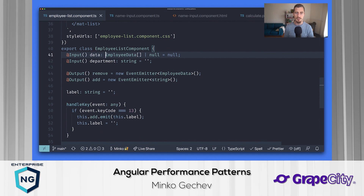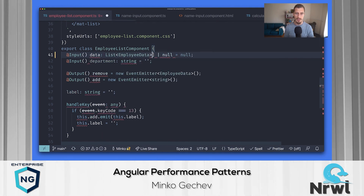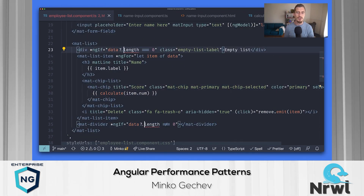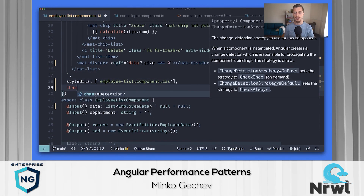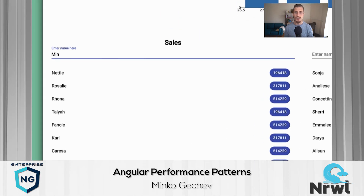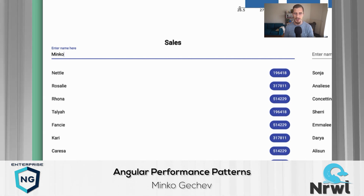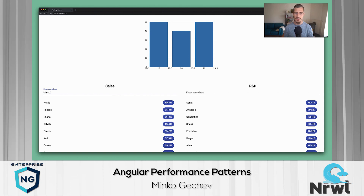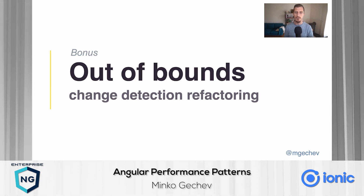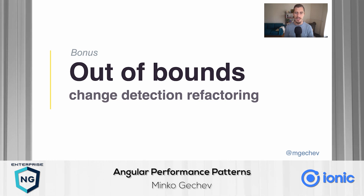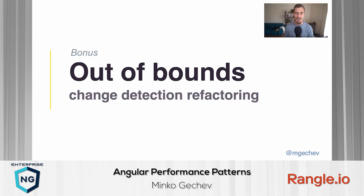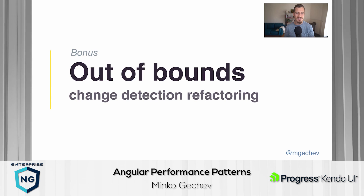Since we're now passing immutable lists to the employee list component, we need to update the type of its data input. Immutable lists have size rather than a length property, so we need to update the property access in the template and set the change detection strategy to OnPush. Now let us get back to the application. Notice that entering a new employee now is a little faster, even though it still looks pretty laggy. Let us fix this as part of the refactoring of out-of-bounds change detection. When we start typing into the input, Angular performs change detection pretty regularly. It checks the whole employee list component and re-evaluates each employee's heavy computation twice, on input and on keydown events, even though none of the values have changed.